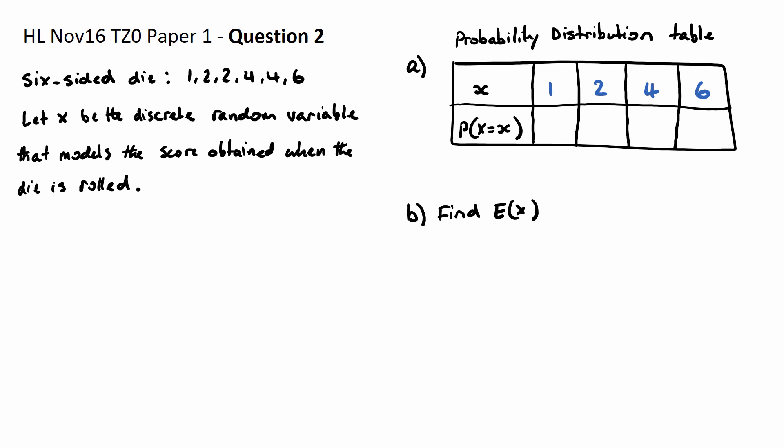Now the bottom line here, this is the probability of each of those outcomes. Now there's only one 1 out of the six faces here. So to get a 1, we'll just have a probability of 1/6. There are two 2s, so there'll be 2/6, which is a third. There are two 4s, which is a third. And there's only one 6, so therefore 1/6. And that's it.